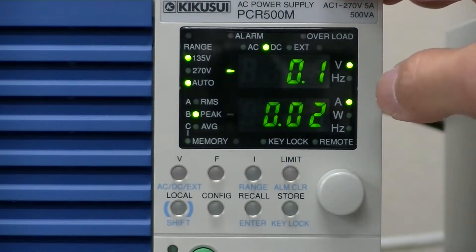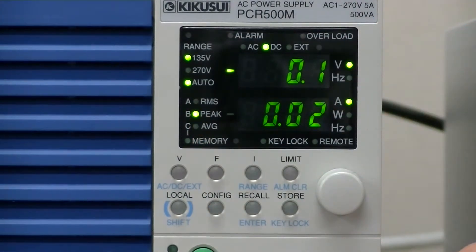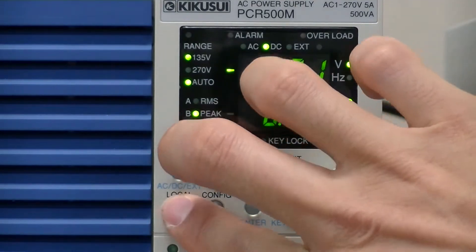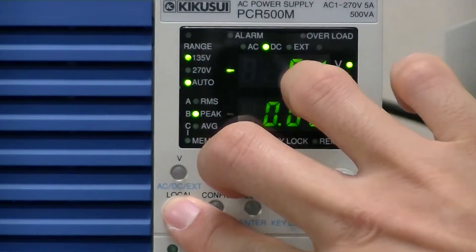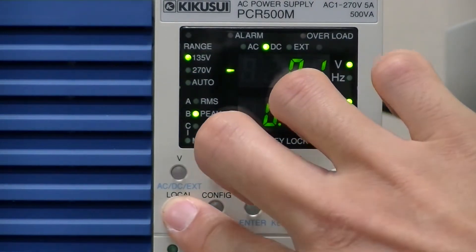First, we have to set the voltage range. PCRM series voltage range is selectable between 135 or 270V, or you can select auto mode. Remember that you can set the range only when the output is turned off. Press SHIFT and I to select range. Let's set it to 135.